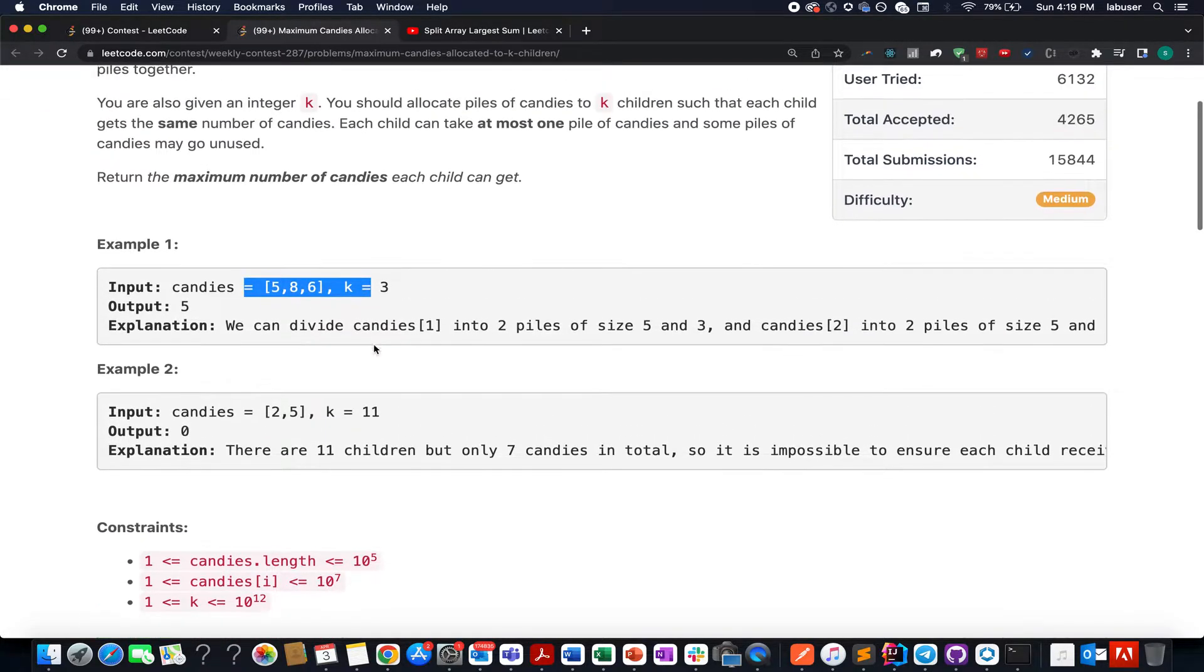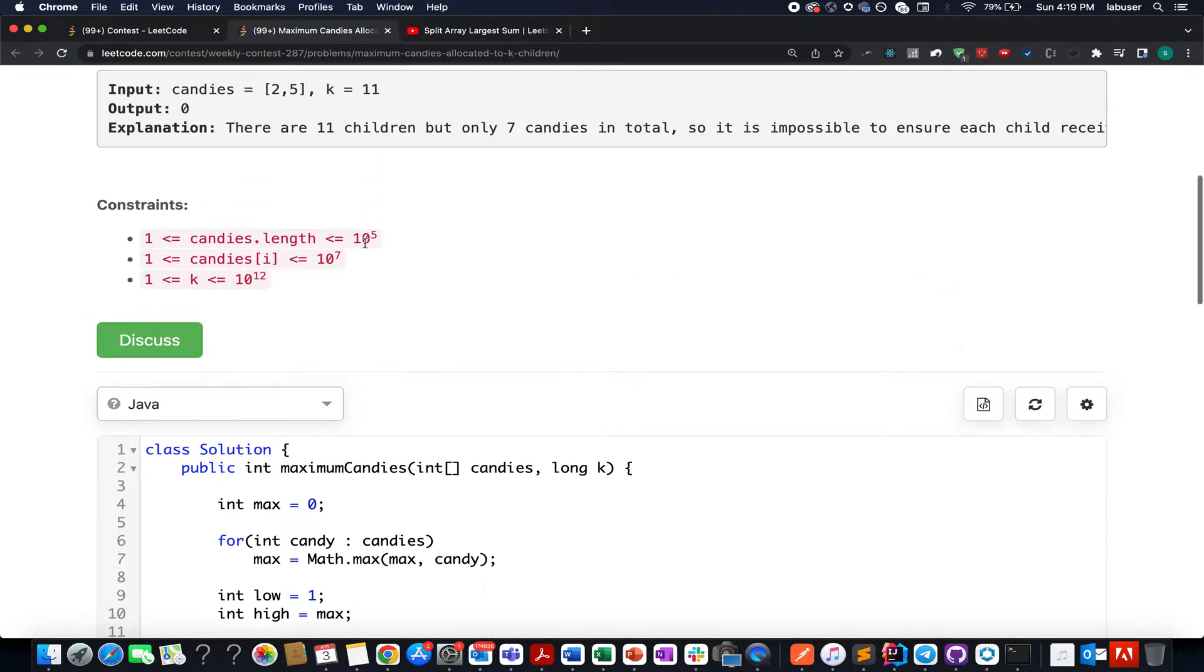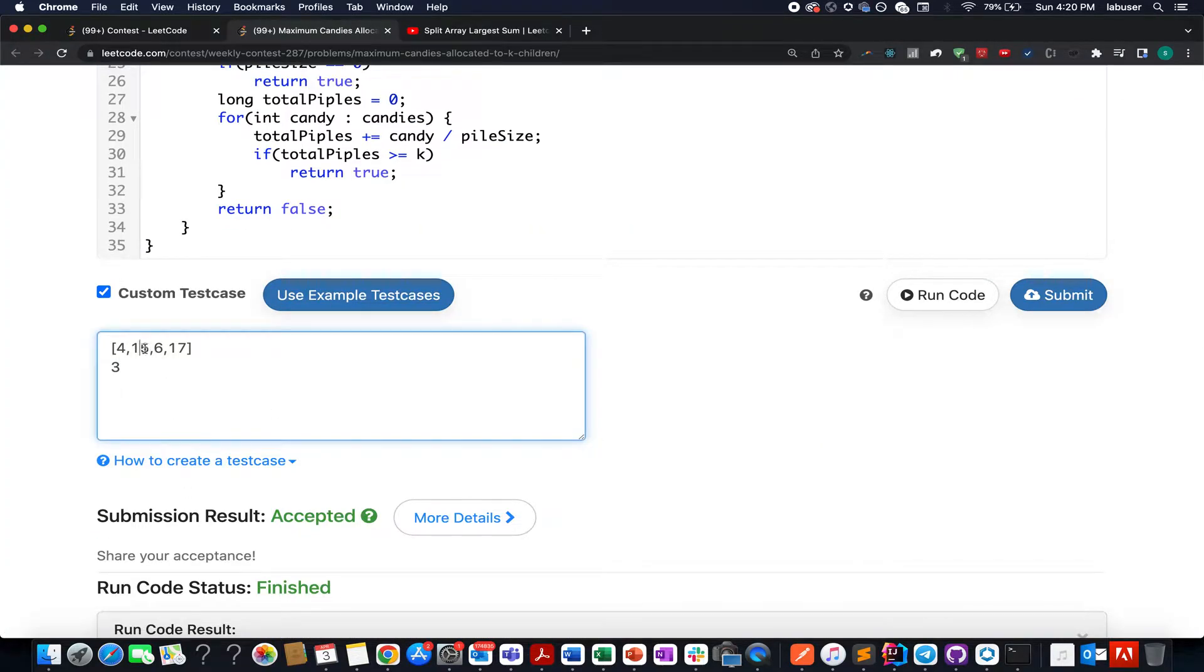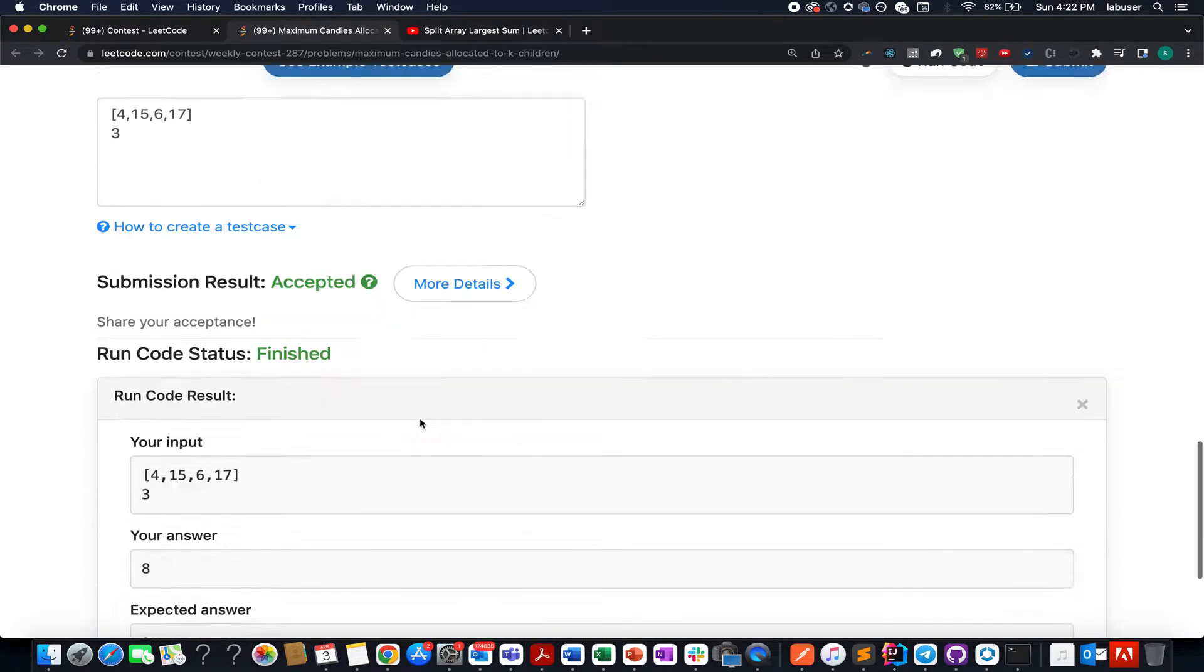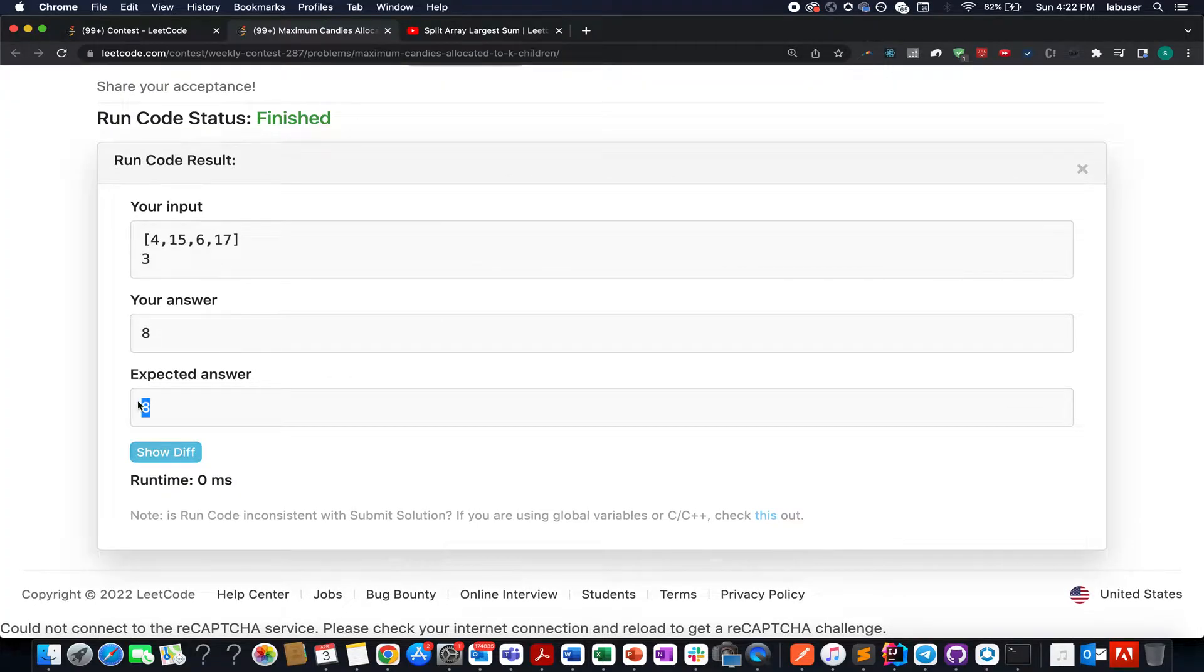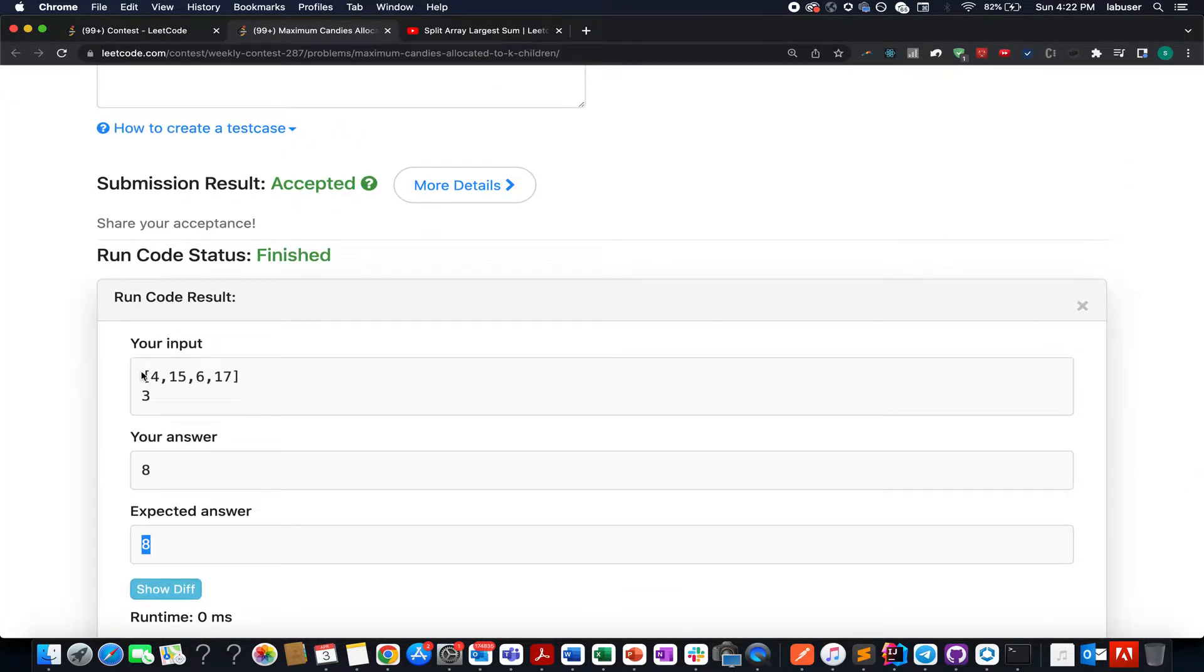Each child can take at most one pile, and some piles may get unused. We need to identify the number of candies which each child is going to get. They've provided simple examples, but I've changed the example to this one: [4, 15, 6, 17] with k=3. Let's see how many candies each child will get - the answer turns out to be 8.